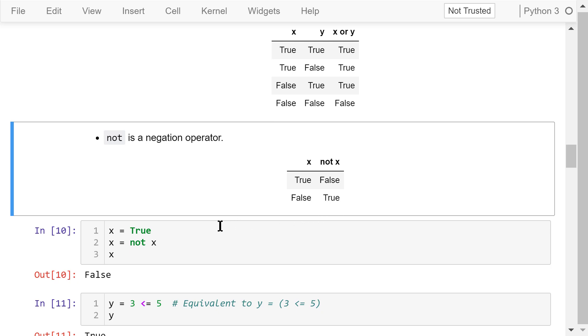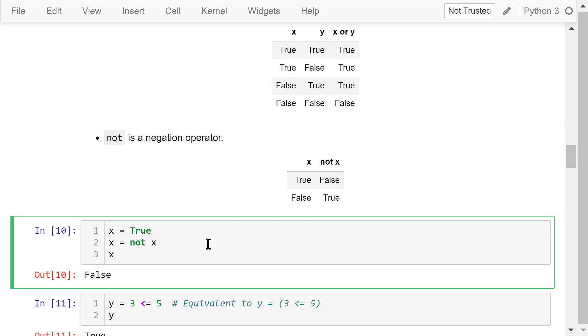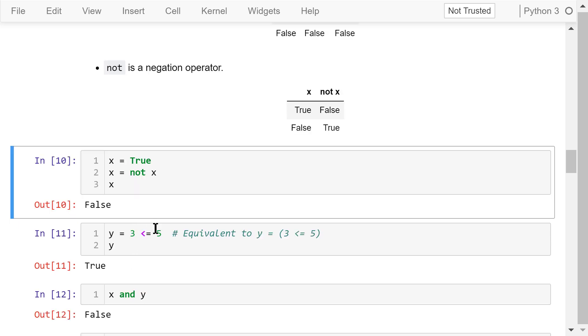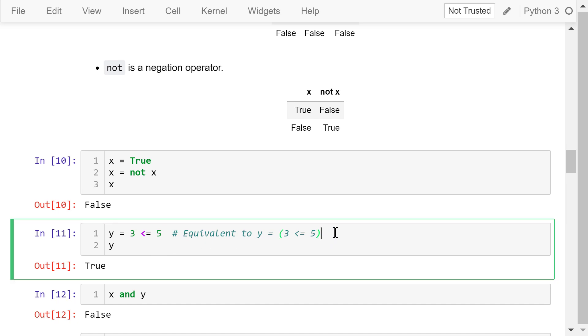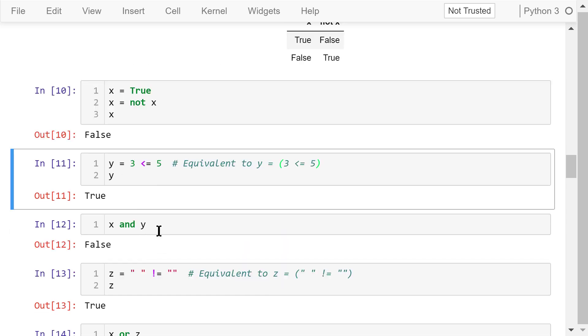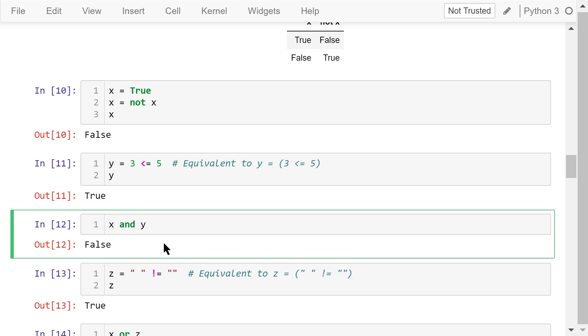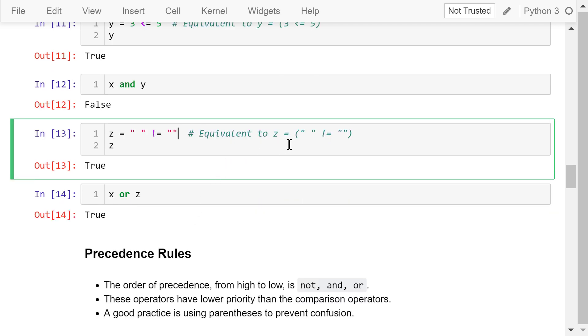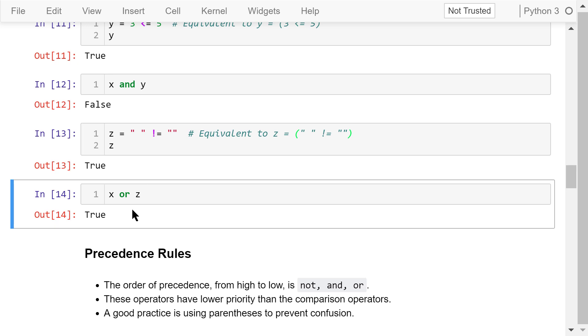Let's see some examples. x equals true. Update x to be not x, so now x will be false. In this statement, is 3 less than or equal to 5? The answer to this part is true, so y equals true. x is false, y is true, so x and y is false. x is false. In this statement, we will check if this part is true. It means, is the space not equal to an empty string? This is true. They are not the same, so z equals true. x is false, z is true, so x or z is true.